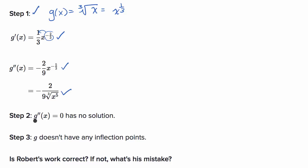In step two, it looks like he's trying to find x values where the second derivative is equal to zero. It is indeed true that this has no solution — you can never make this second derivative equal to zero. In order to be zero, the numerator would have to be zero, and two is never going to equal zero. So this is correct.